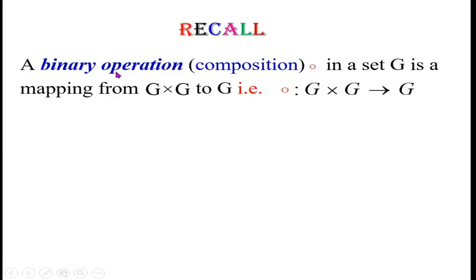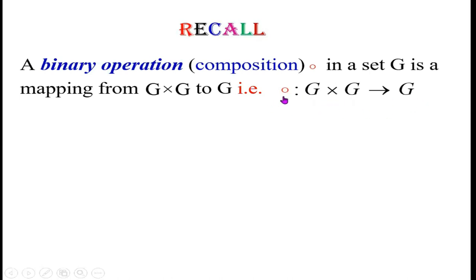The binary operation or composition circle in a set G is a mapping — that is, a function from G cross G to G. If circle is a function from G cross G to G, then the circle is called a binary operation.